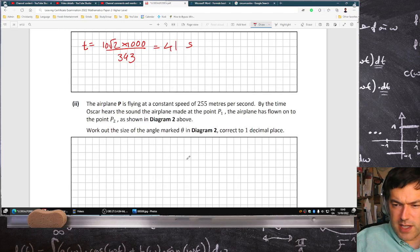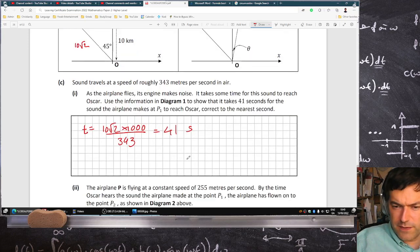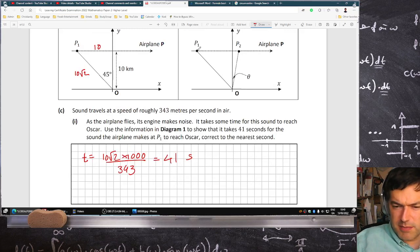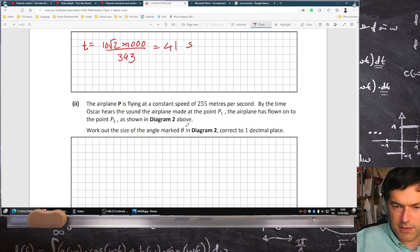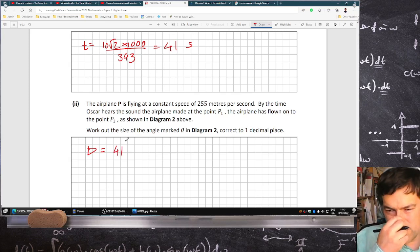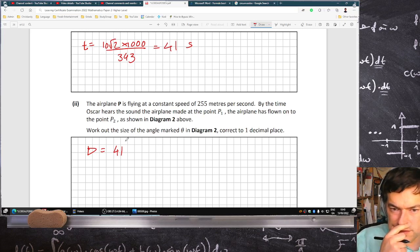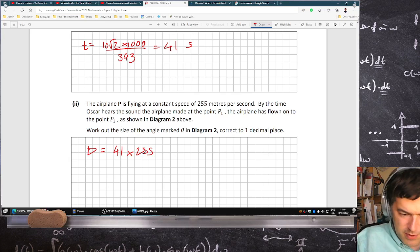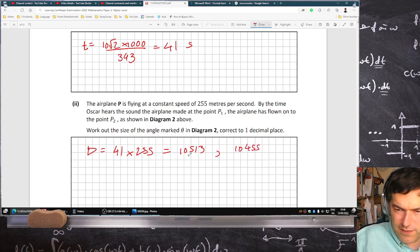The airplane's flying at a constant speed of 255 meters per second. By the time you can hear the sound, work out how far the airplane has flown. Okay, so it's traveling 255 meters per second. By the time you hear the plane, it's already traveled for 41 seconds, so the distance would be 41 times 255. I'm never sure if they want you to use the previous answer to be more accurate or the rounded answer. So if I just do 41 times 255, the distance would be 10,513, but if I didn't use the full decimals it'd be 10,455, so it's a small difference.